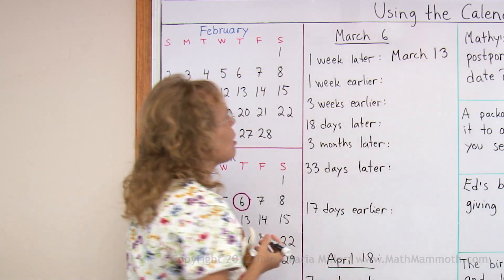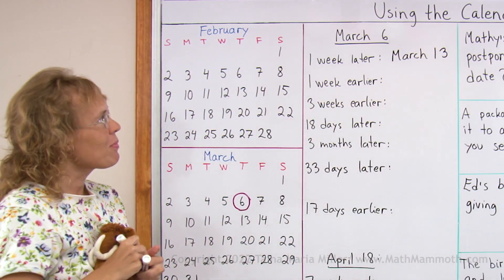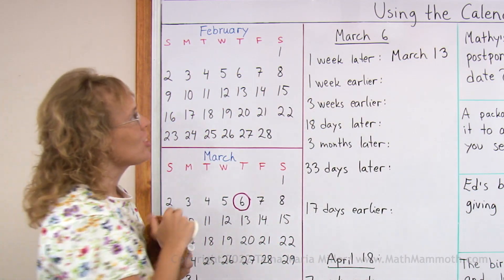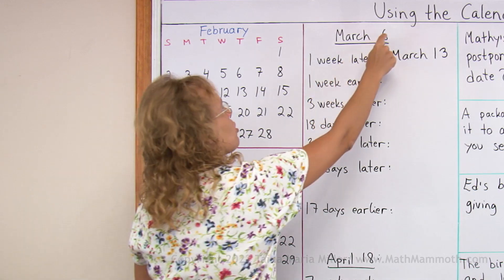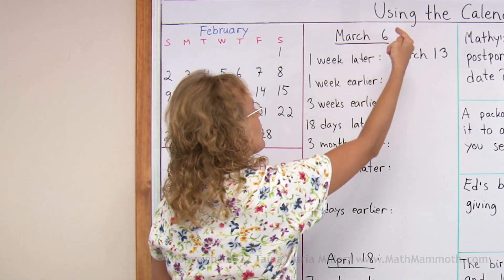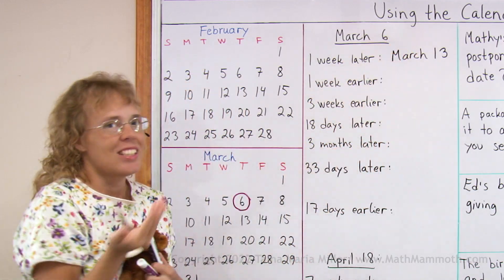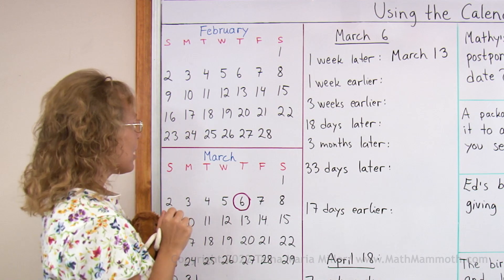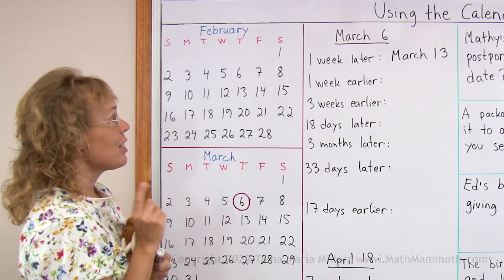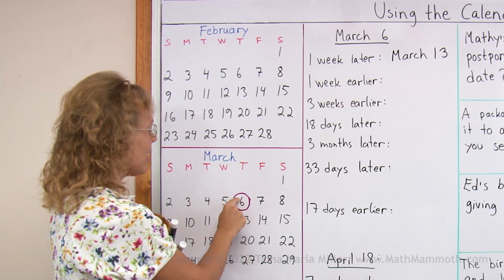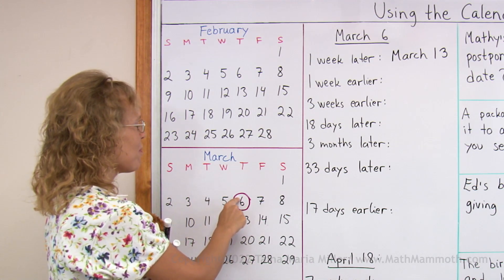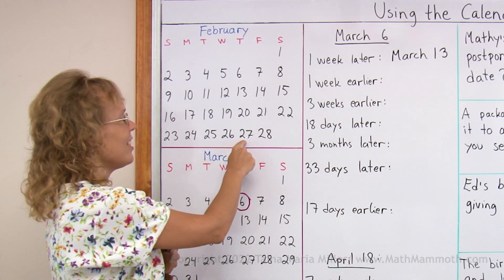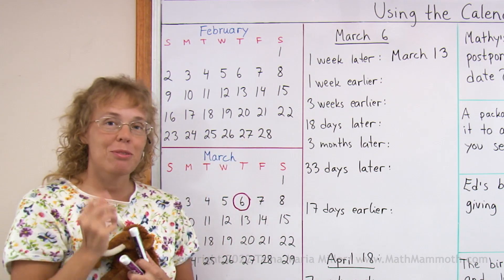Now how about one week earlier? I cannot use subtraction because if I go 6 minus 7, that would be like negative 1. But I can look at the calendar and go up over here — it's February 27.